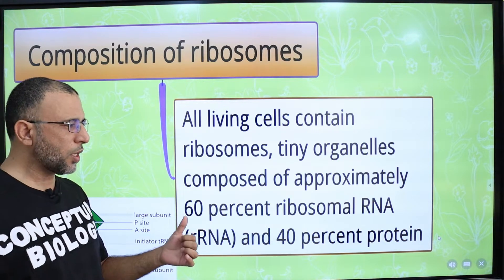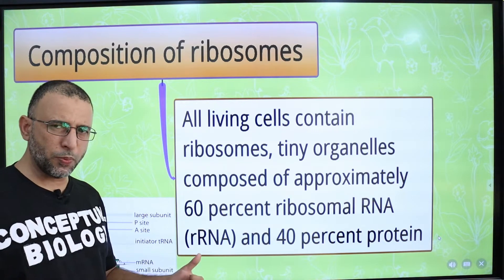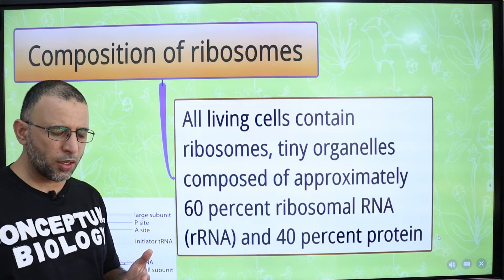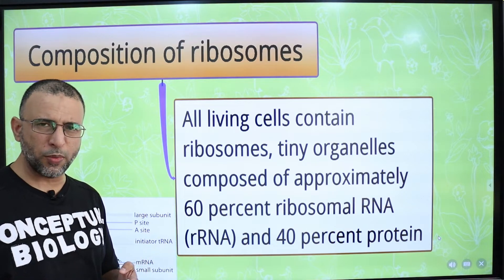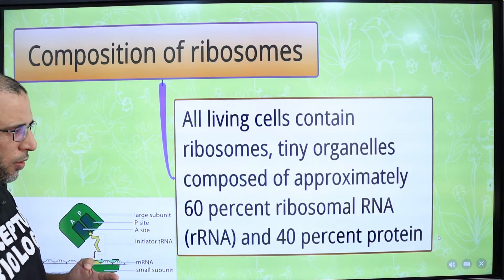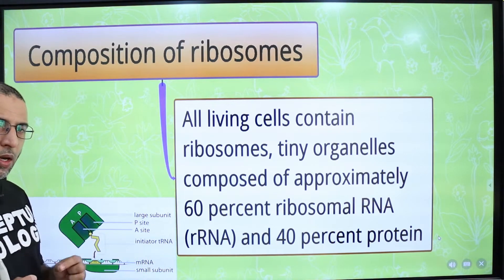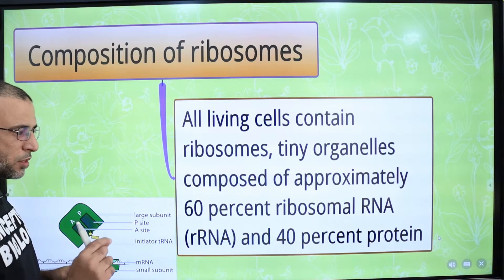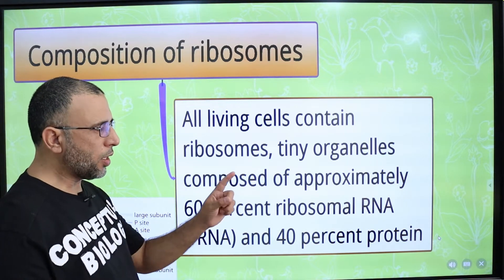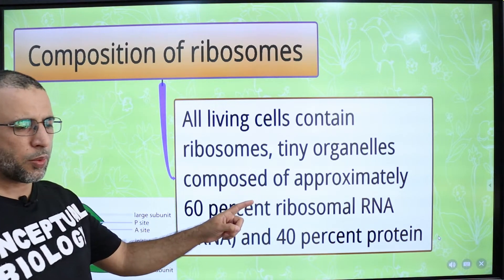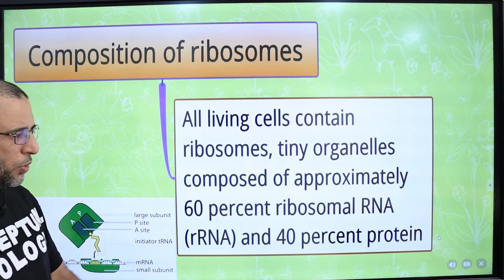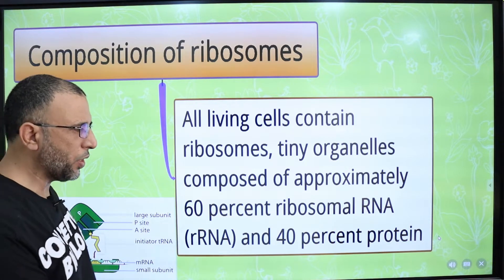Ribosomes are composed of RNA and protein. There are three types of RNA: ribosomal RNA, messenger RNA, and transfer RNA. The RNA present in the ribosome is called ribosomal RNA. The percentage of ribosomal RNA in ribosomes is 60% and the percentage of protein is 40%.